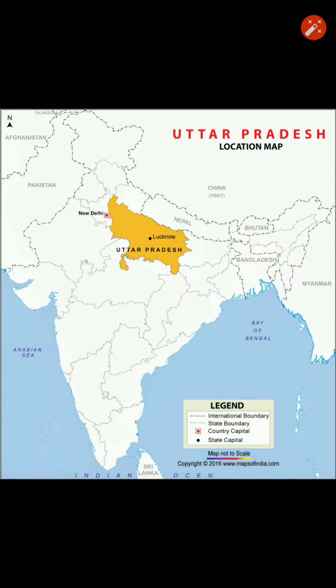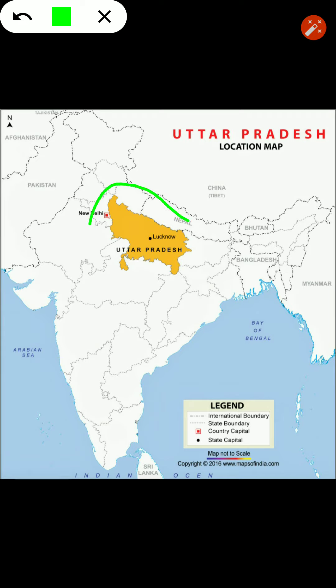Next is Uttar Pradesh. Delhi's neighboring state is Uttar Pradesh. Delhi's grandparents used to live in Lucknow, which is the capital city of Uttar Pradesh. So here you will locate Uttar Pradesh.